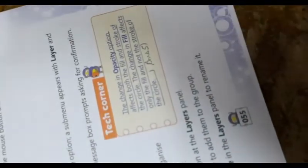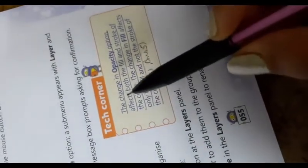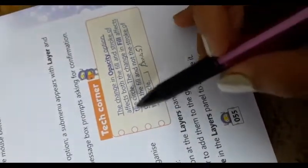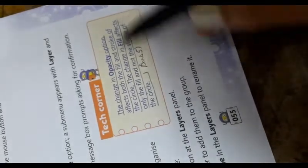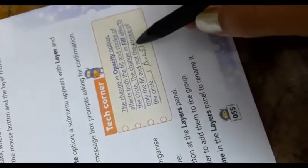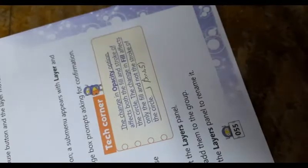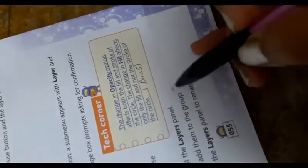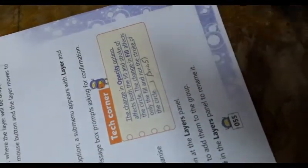Now last question number 5. Discuss about opacity and fill options. Open page number 55. Here. To T. The change in opacity option affects both the fill and stroke of the circle. The change in fill affects only the fill and not the stroke of the circle. This is answer number 5.